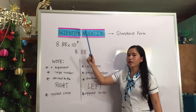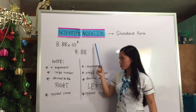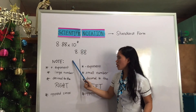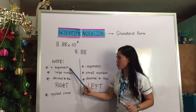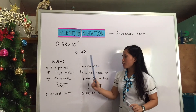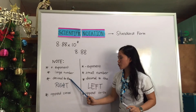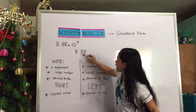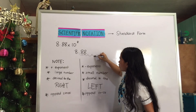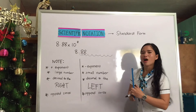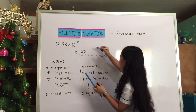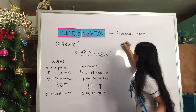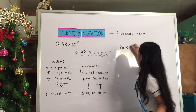Now let's go to converting scientific notation to standard form. Our first example: since the exponent is positive, we follow this note — a positive exponent means a large number, so we move the decimal to the right. Since the exponent is 8, we move the decimal 8 places: 1, 2, 3, 4, 5, 6, 7, 8. Then we append zeros — 1, 2, 3, 4, 5, 6 — so the final answer is 888,000,000 — 888 million.